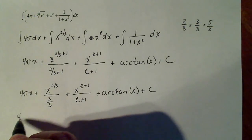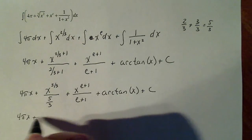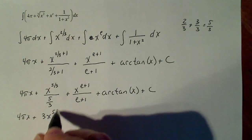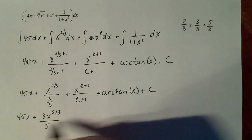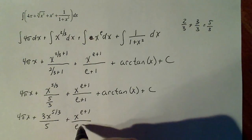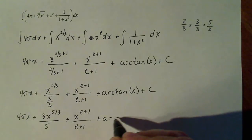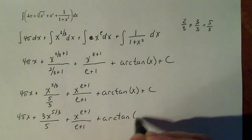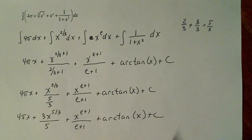So one more step: four pi x plus three x to the five thirds over five plus x to the e plus one over e plus one plus arctan of x plus c. There you have it.